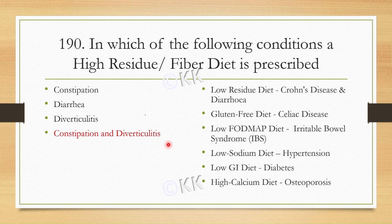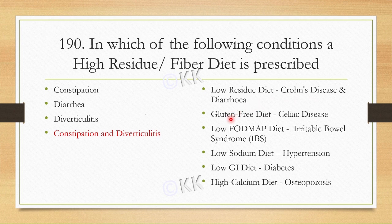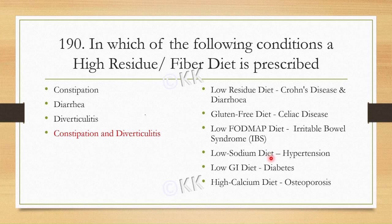In constipation and diverticulitis, we give a high residue/high fiber diet. We saw the benefits of fiber earlier today. Other therapeutic diets: Low residue diet is used in colitis and diarrhea. Gluten-free diet is given in celiac disease — which we also covered today. Low FODMAP diet is given for Irritable Bowel Syndrome (IBS). Low sodium diet is prescribed for hypertensive patients. Low GI diet is for diabetic patients. High calcium diet is for osteoporosis patients.